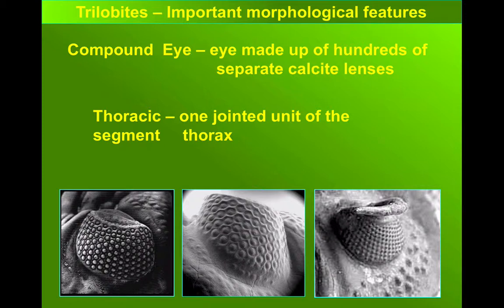This gave trilobites a tremendous advantage. To be able to see — in particular to detect movement with eyes like this — gave them a massive advantage over other organisms that lived in the Cambrian and Ordovician seas.